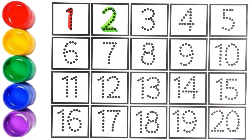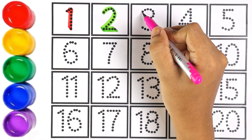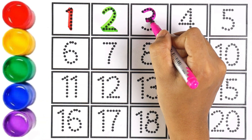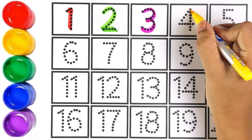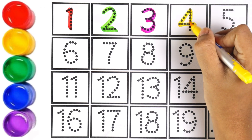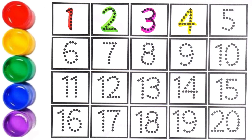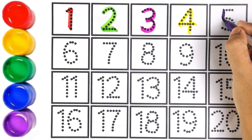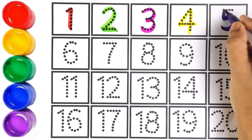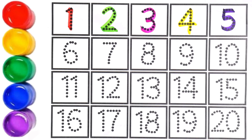Number two. Please do watch the video until the end! Pink color — number three. Which number is this, kids? Number three! Yellow color — number four. Kids, can you repeat after me? It's number four! Purple color — number five.